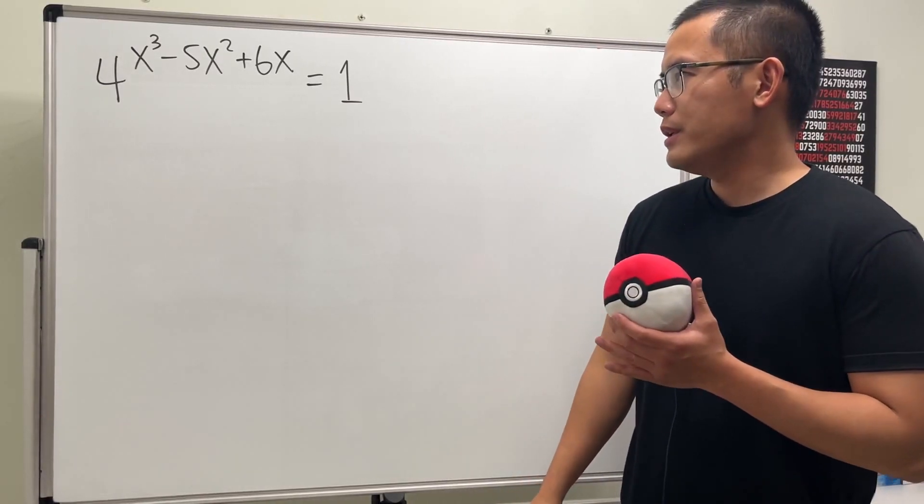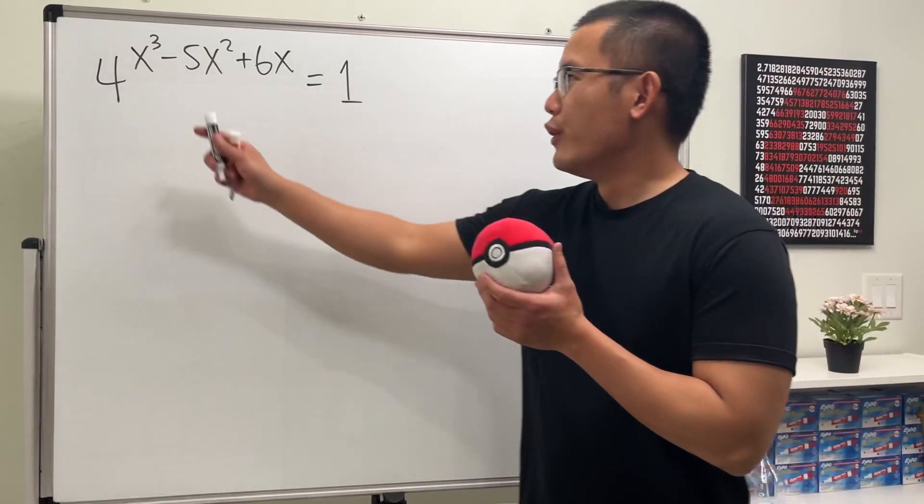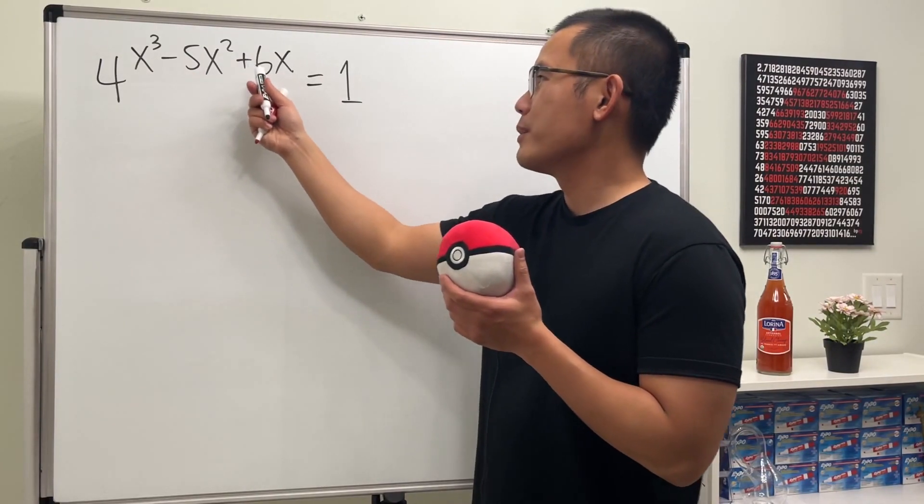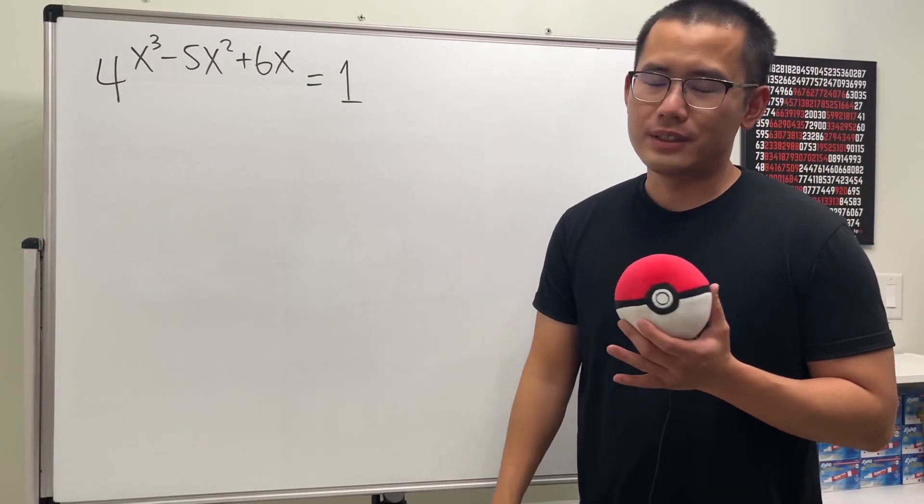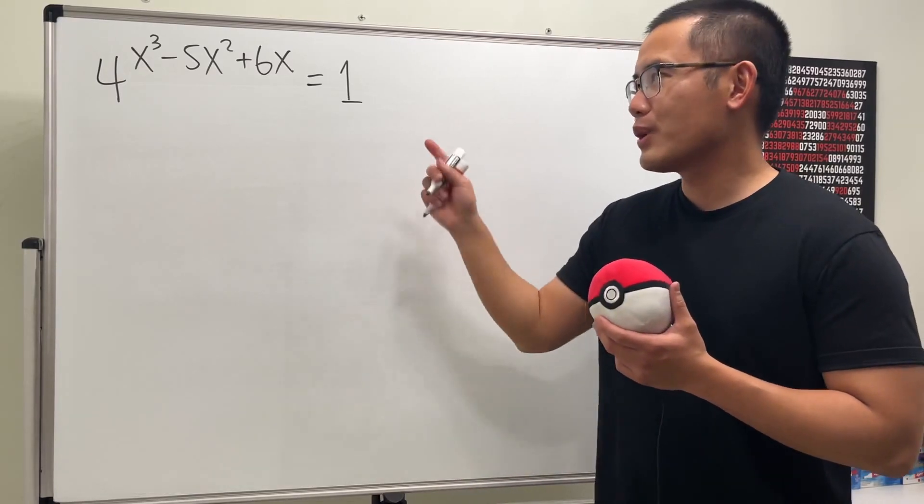Okay, I have this exponential cubic equation for you guys: 4 to the x³ minus 5x² plus 6x is equal to 1. Well, as always, please pause the video and try this first.